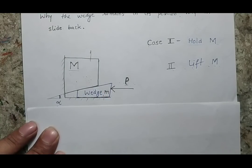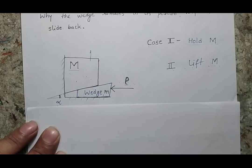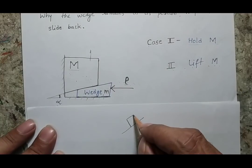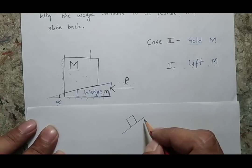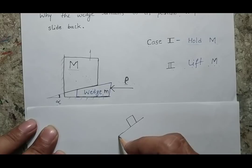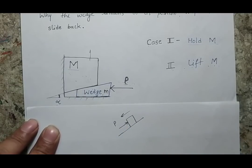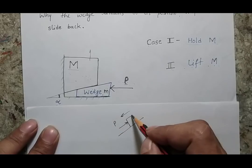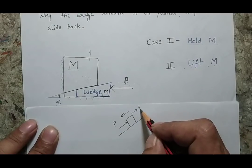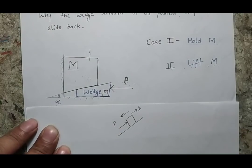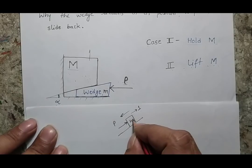We need to understand that friction basically introduces two extreme limits of equilibrium. For example, suppose there is a body resting on an inclined surface. If friction is not sufficient, the body will try to slide downward. Suppose I am applying a force P. One condition is that P is so large that the body starts moving upward. On the other hand, if P is at a limiting condition, it is just holding the body at this position.